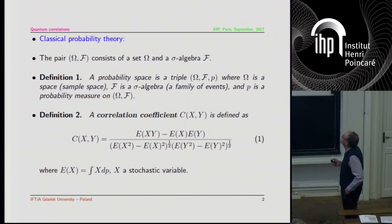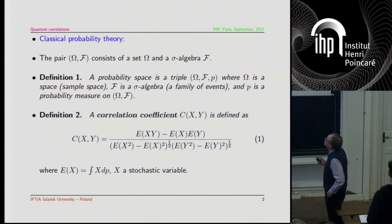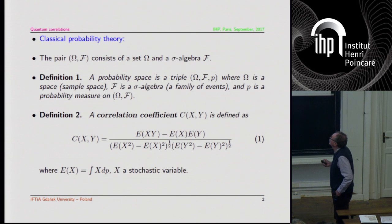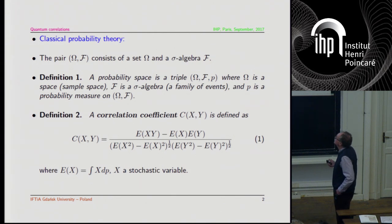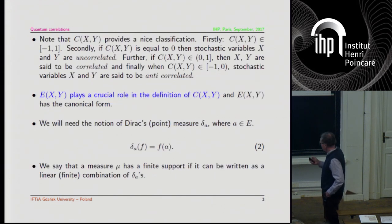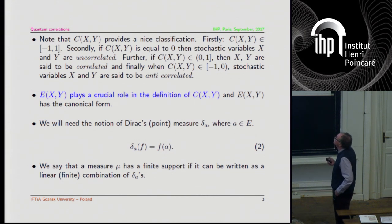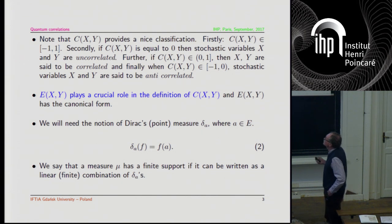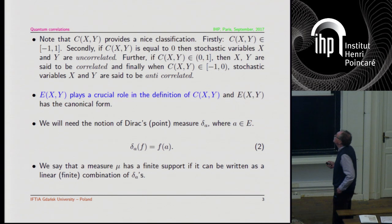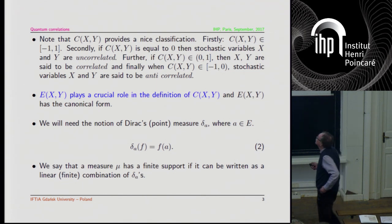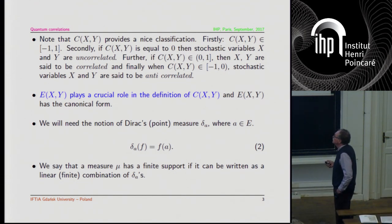We start with the classical picture, which is a very elementary observation taken from any textbook. For our probability space, we have a nicely defined correlation coefficient. Here is the two-point correlation function, and it seems that this integrand is the most important part — this is just normalization. The picture is such that we have a nice picture of what is correlated, uncorrelated, anticorrelated, and we have a good measure. This two-point correlation function plays a crucial role.